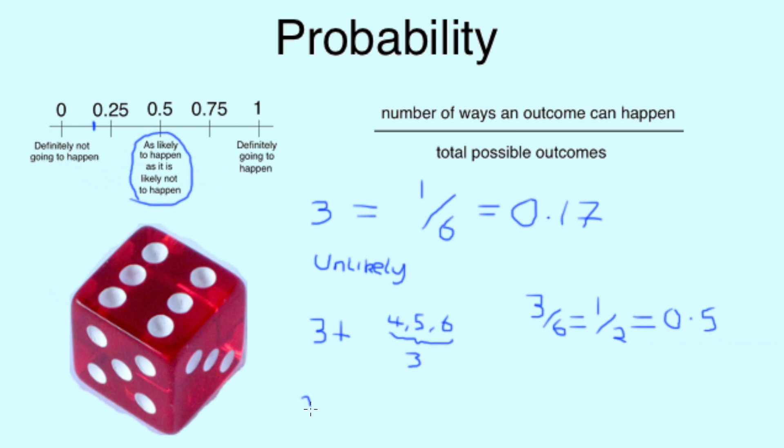If we wanted to roll more than a 2, there is still 3, 4, 5 and 6 that we could roll. So, that gives us 4 possibilities and there are still 6 faces on the dice, so that's 4 out of 6, which is the same as 2 out of 3, or 0.66. And on our scale, we can see that that's in the likely zone because it's not a certainty, however the chances of that happening are more likely than they are not.